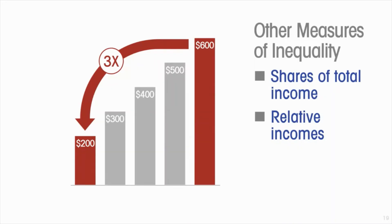These are not perfect measures; their advantage is that they are easy to identify with and easy to calculate. None of these measures that focus on the bottom or top so much percent tell you what is happening to the entire distribution — they really take only one point on the Lorenz curve. The advantage of the Gini coefficient is that it represents inequality across the entire income distribution, so it is more accurate, but these quick and dirty measures are more popular.